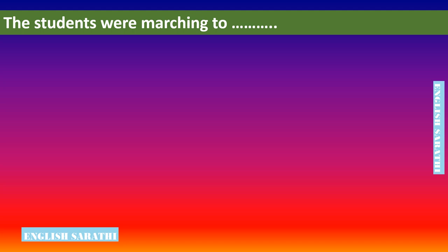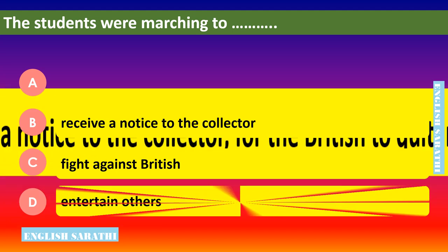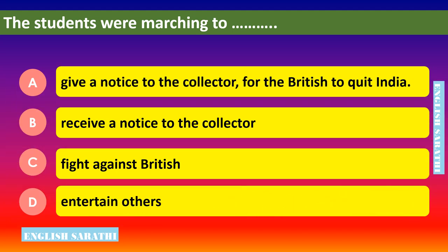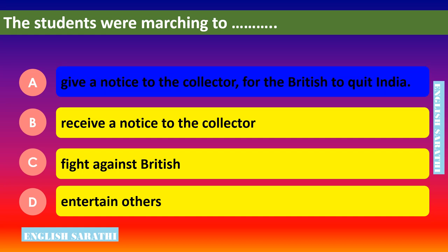The students were marching to dash. Options are: option A - give a notice to the collector for the British to quit India, option B - receive a notice from the collector, option C - fight against the British, option D - entertain others. The correct option is option A - give a notice to the collector for the British to quit India.